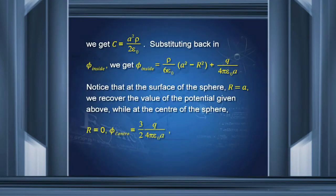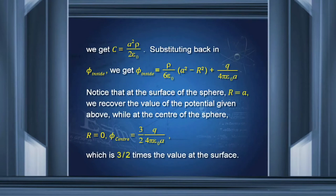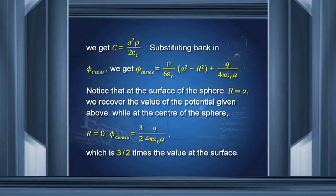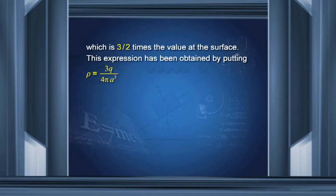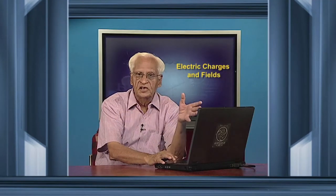At r equal to 0, we recover the potential at the center, which, putting r equal to 0, is equal to 3/2 times q/4πε₀A — that is 3/2 times the value at the surface. So if I plot the profile: at the center the potential is 3/2 times the surface potential, and then outside the surface it varies as 1/r. That is the profile of the potential due to a non-conducting uniformly charged sphere.